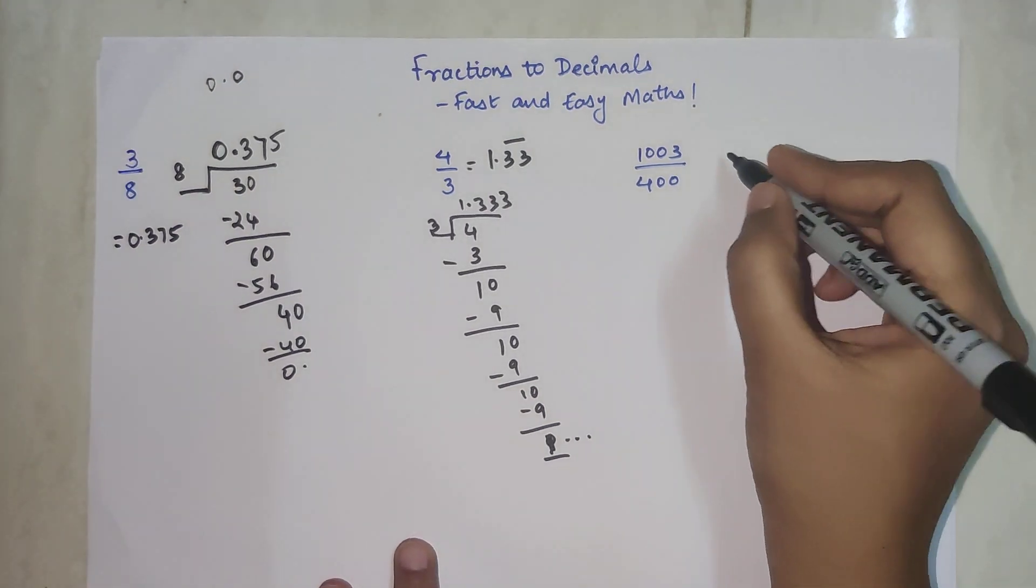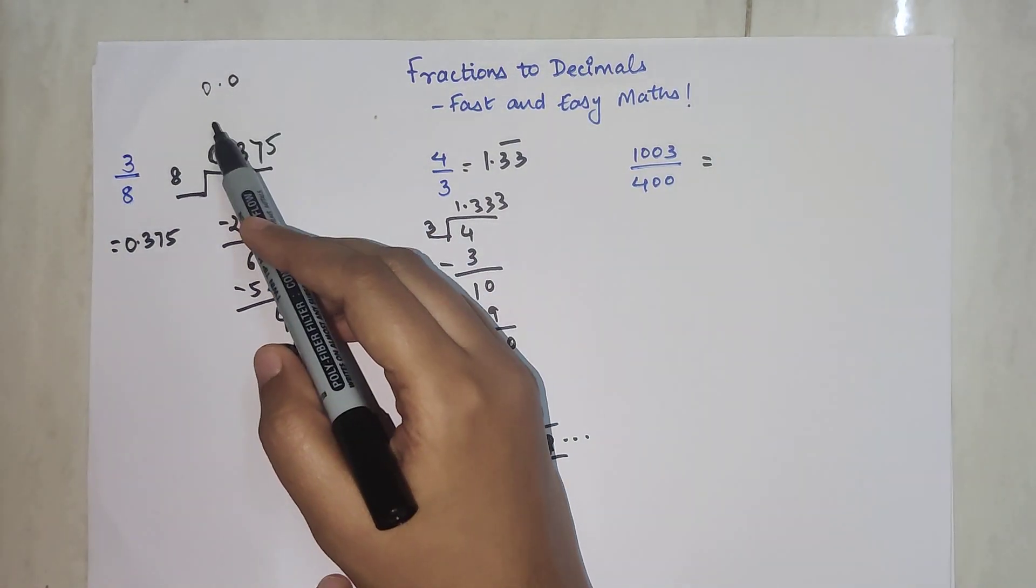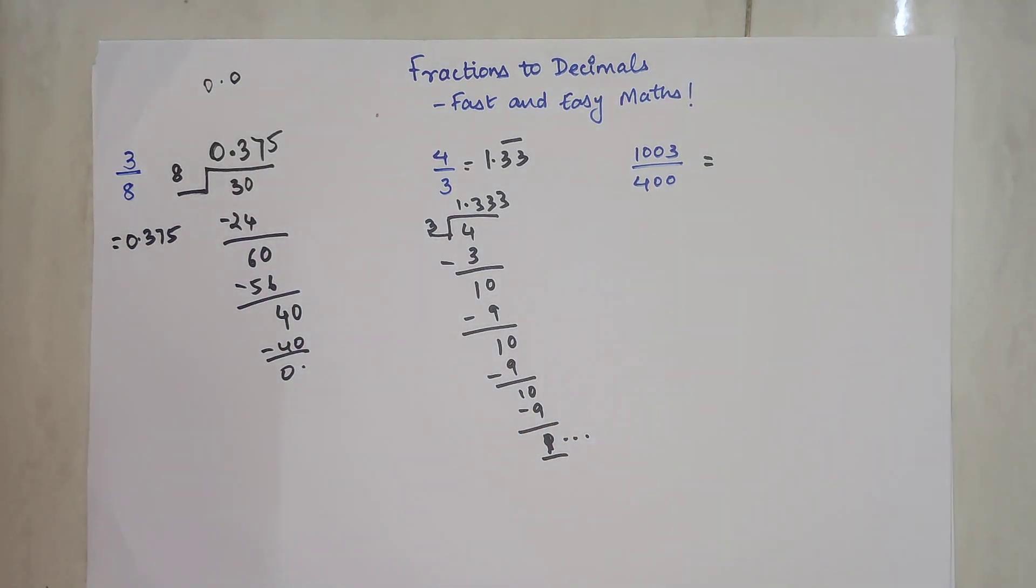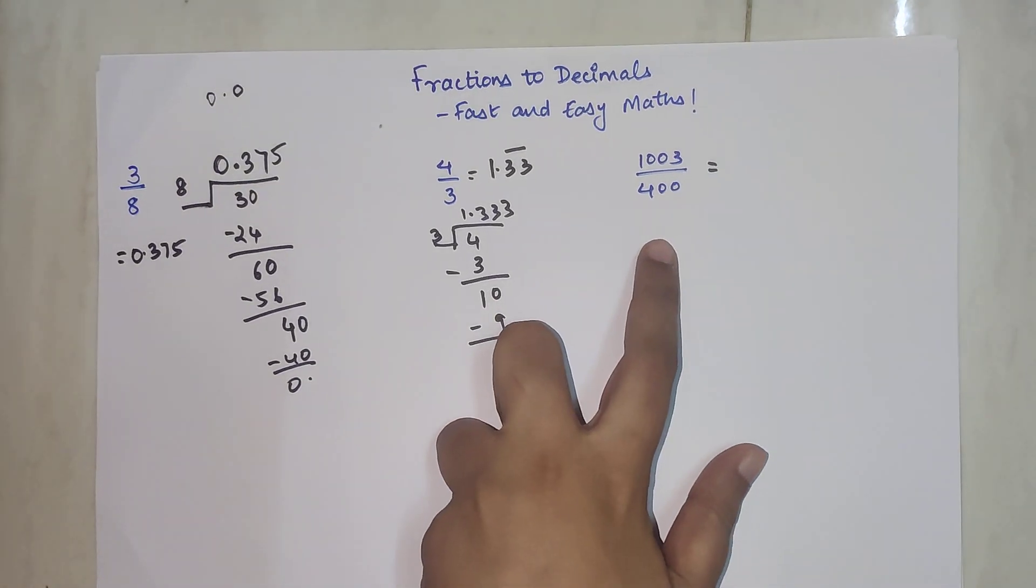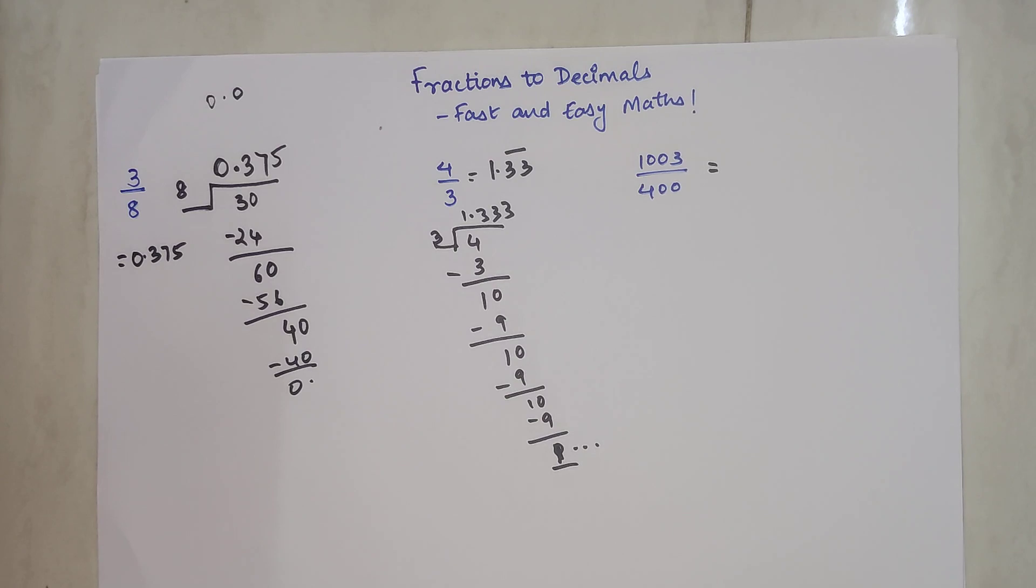So I can say my answer is 1.33 where 3 is recurring. Now there's a scenario where we might have to add a 0 even after using the decimal point. This is that question. If you've understood what I've told you till now, then you can take a pause and try to solve this one.